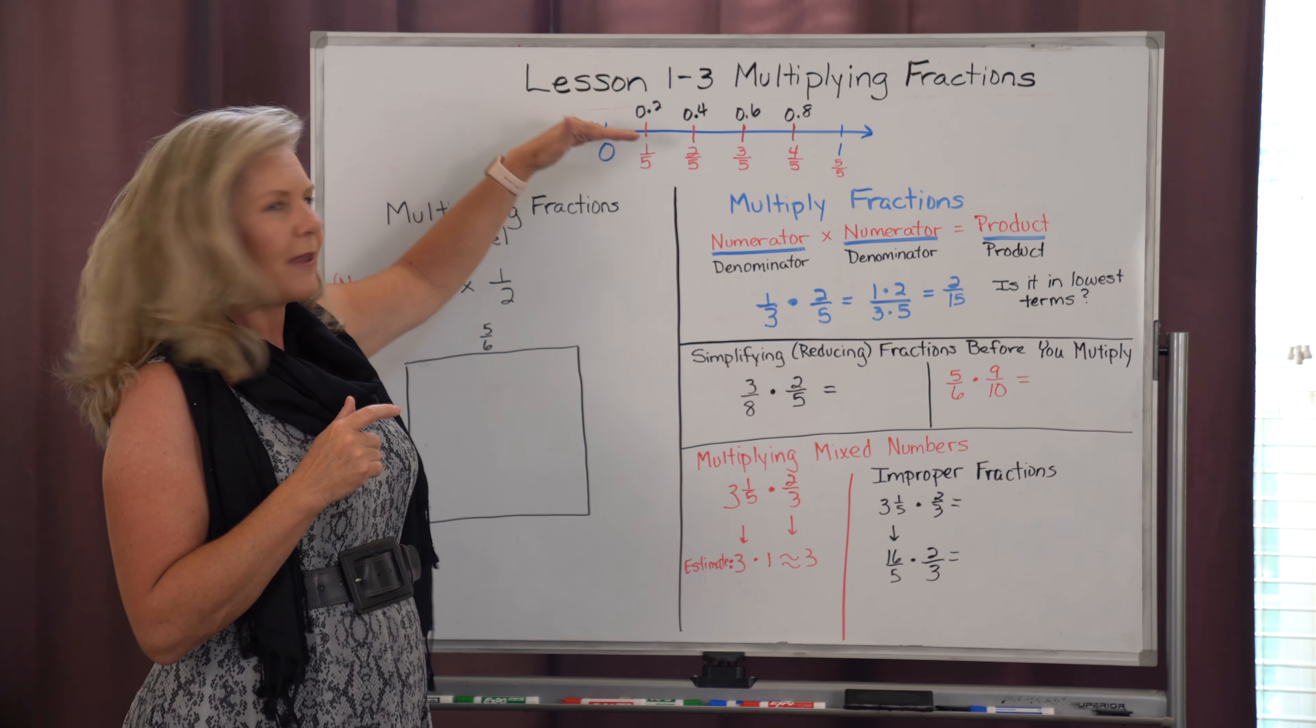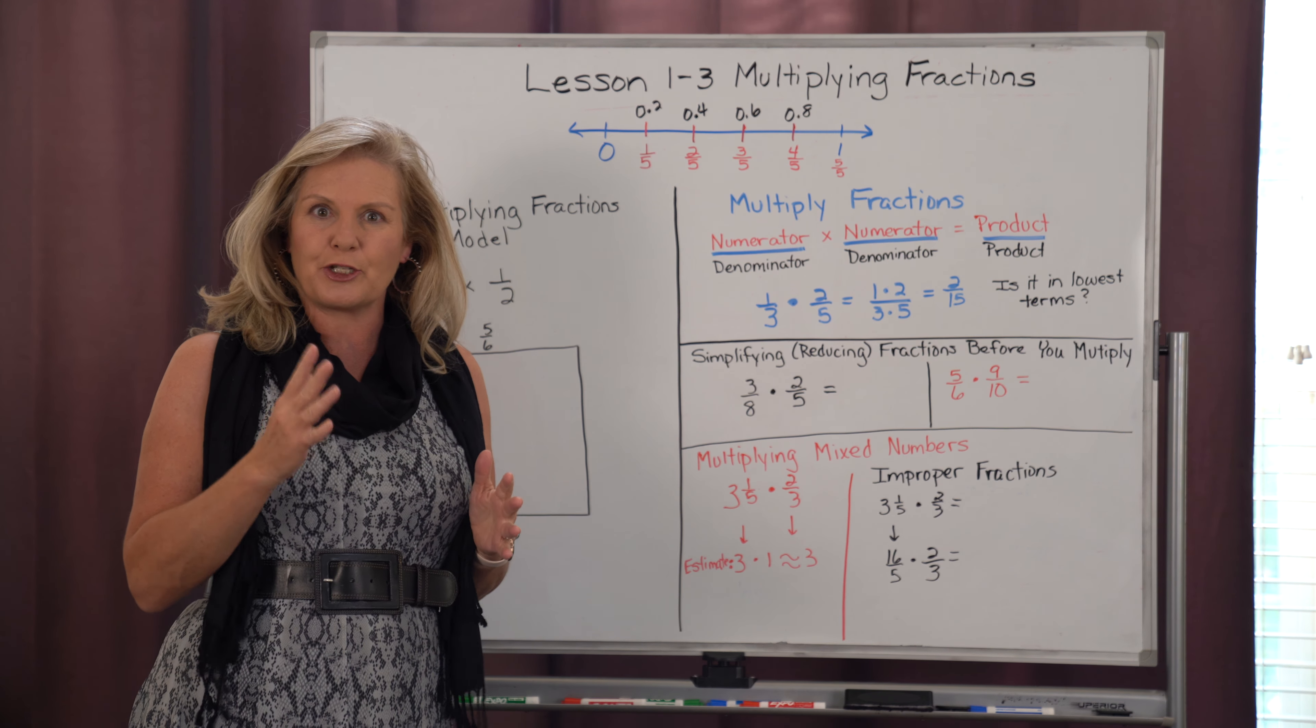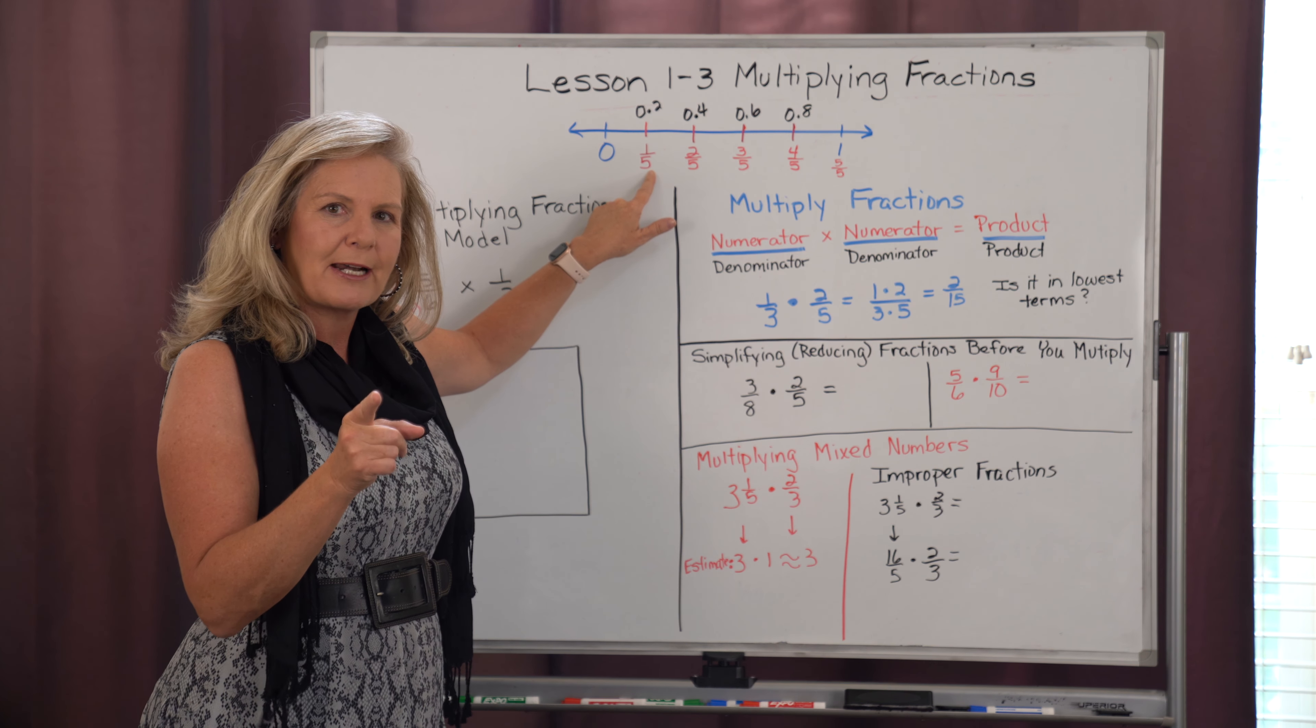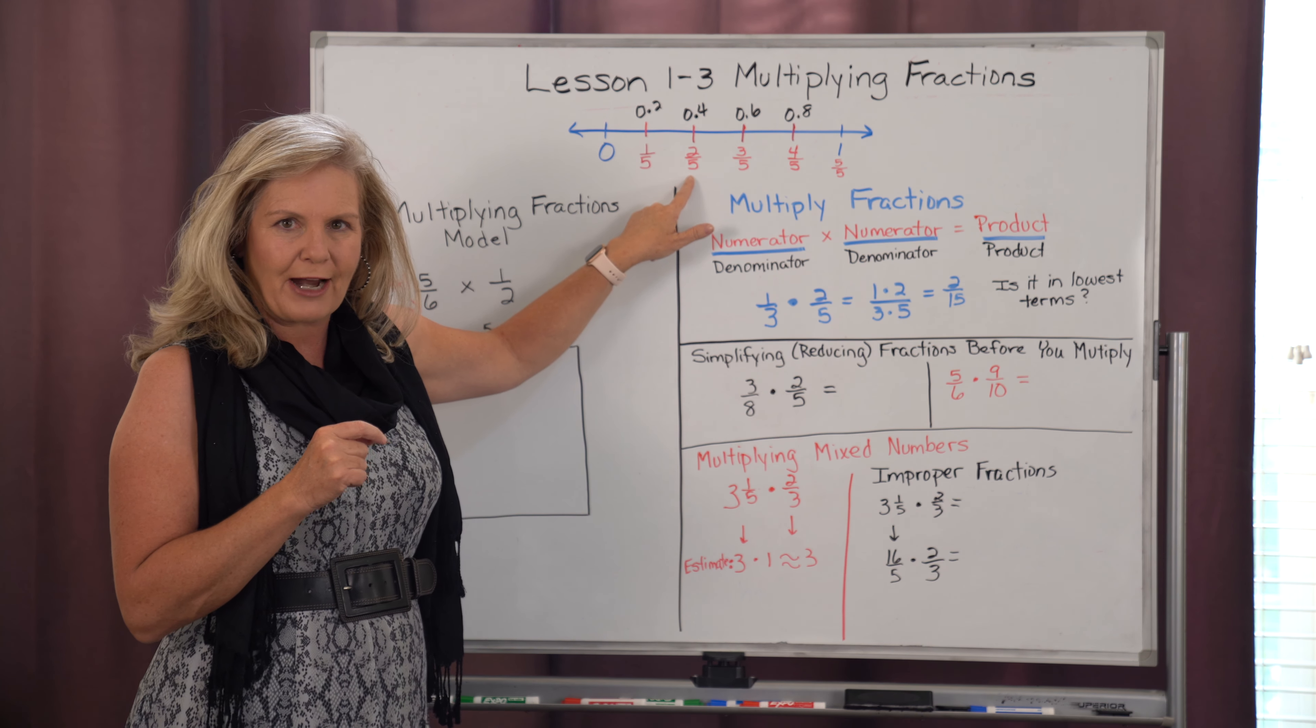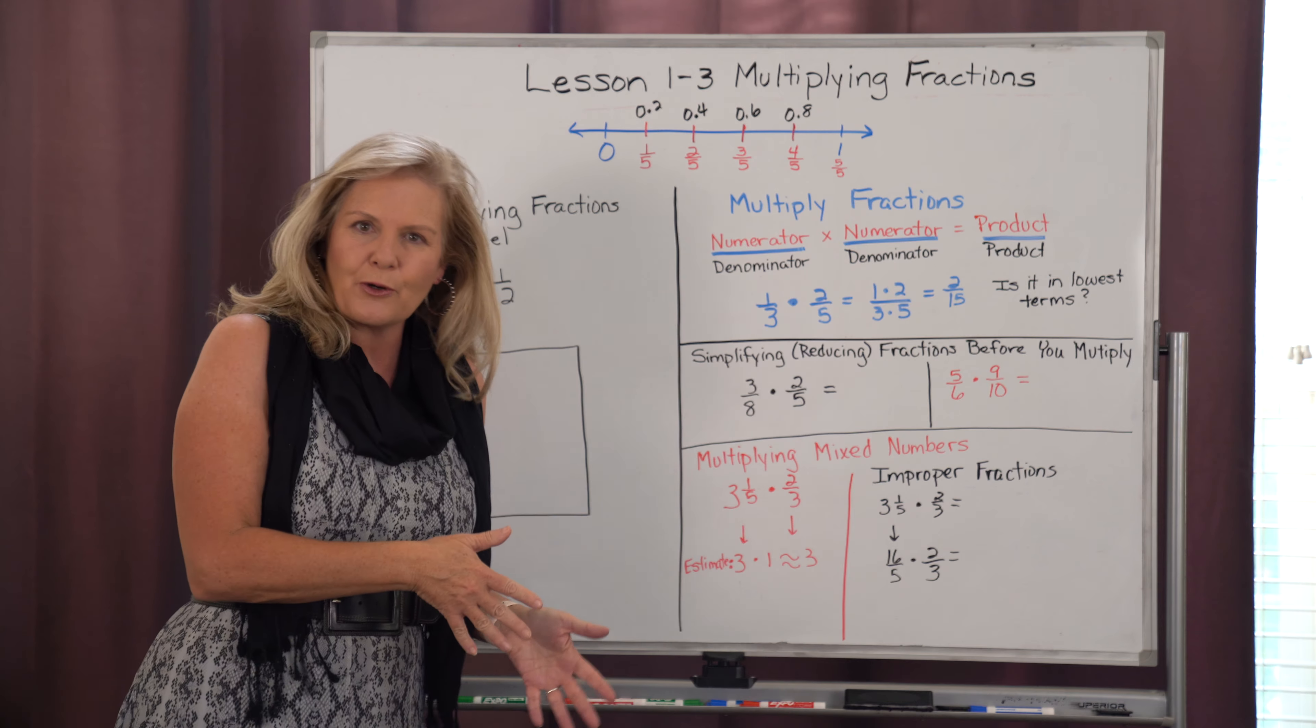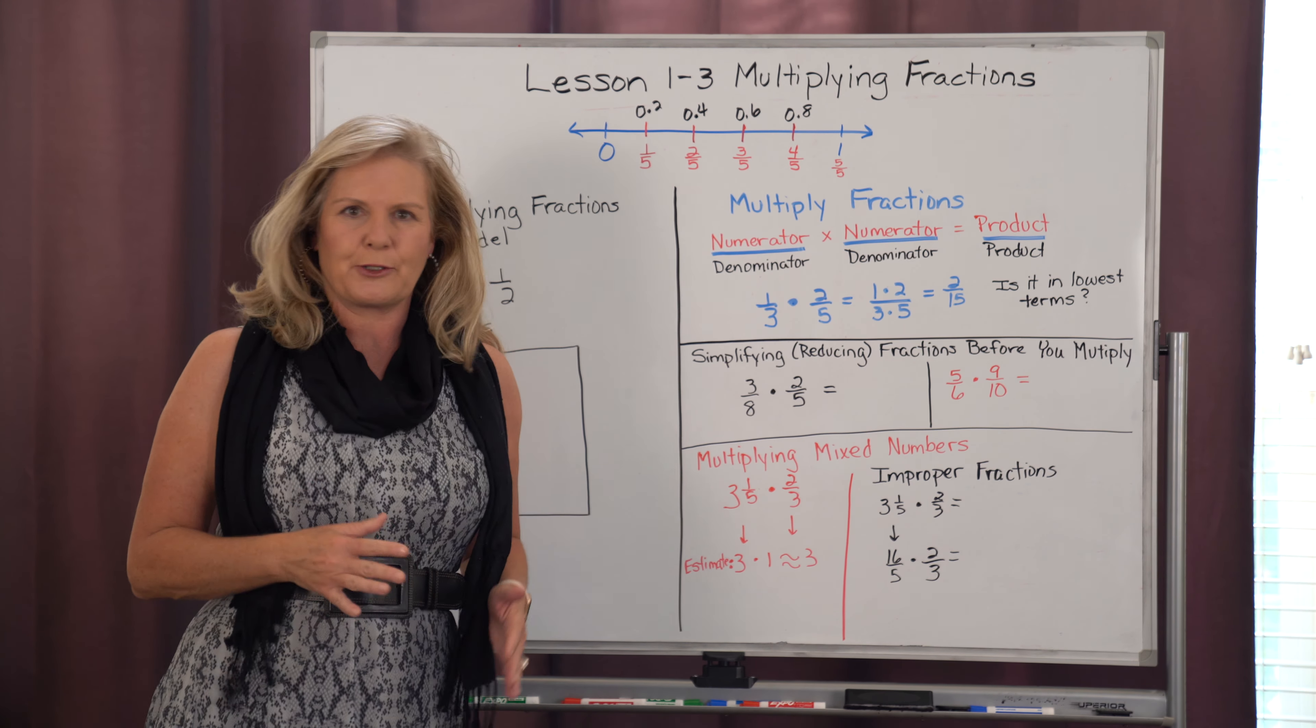Now notice on my number line, I've also added decimals. Because you can name a fraction and a decimal interchangeably. We can go back and forth. So 1 fifth as a fraction is exactly the same spot on the number line as 2 tenths as a decimal. And 2 fifths as a fraction is exactly on the same spot of the number line as 4 tenths. So I can choose to either work in decimals or in fractions. It's up to me because they name the same spots.